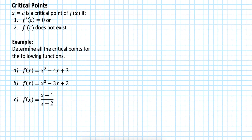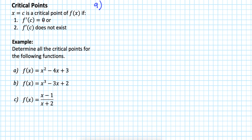Example. Determine all the critical points for the following functions. A: we have f(x) equal to x squared minus 4x plus 3. What you need to do is find the derivative and find c when the derivative is equal to 0. c is the critical point.